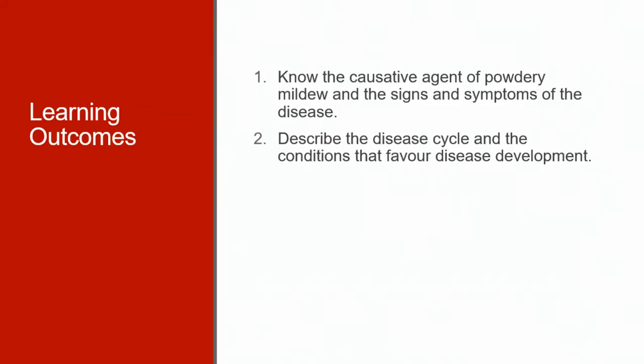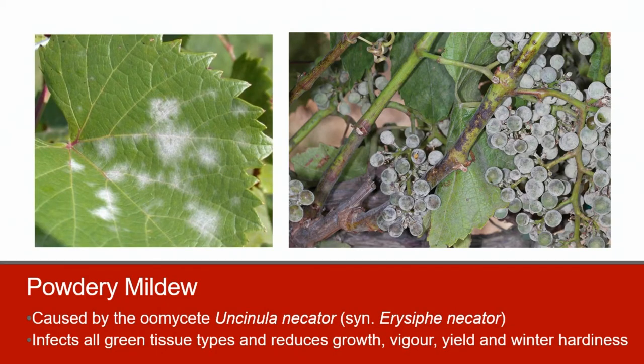The learning outcomes for this lecture are to know the causative agent of grape powdery mildew and recognize and describe the signs and symptoms of the disease. You should also be able to recognize and describe the disease cycle and the conditions that favor disease development.